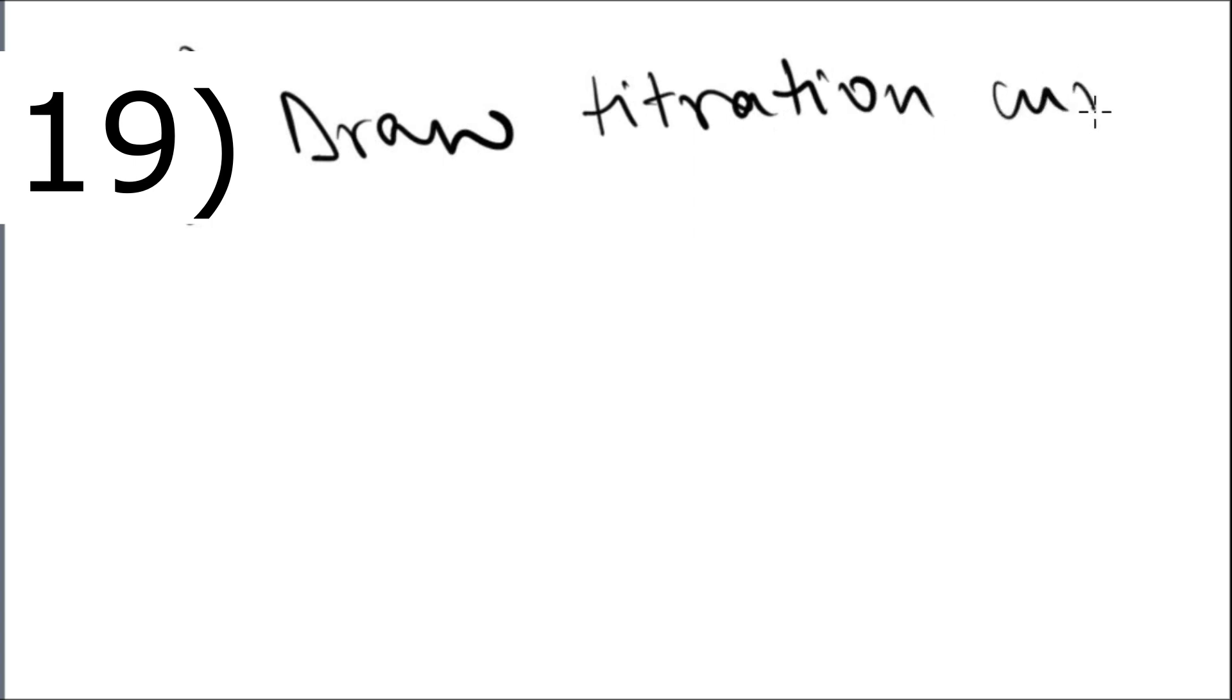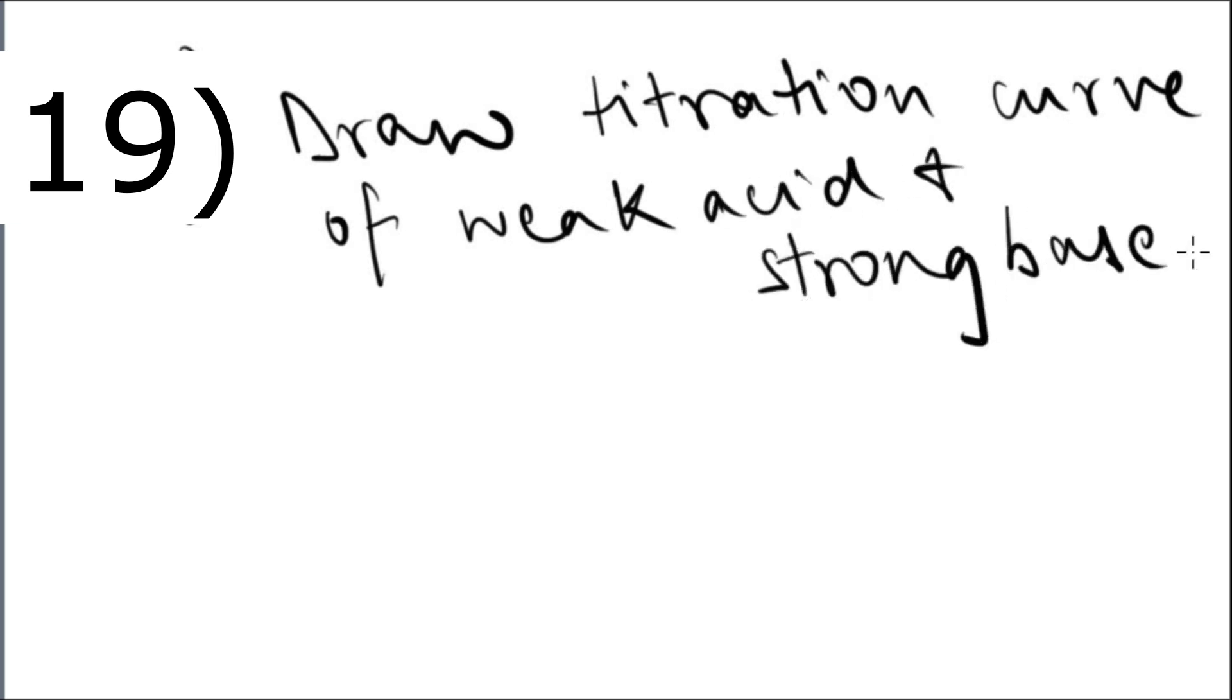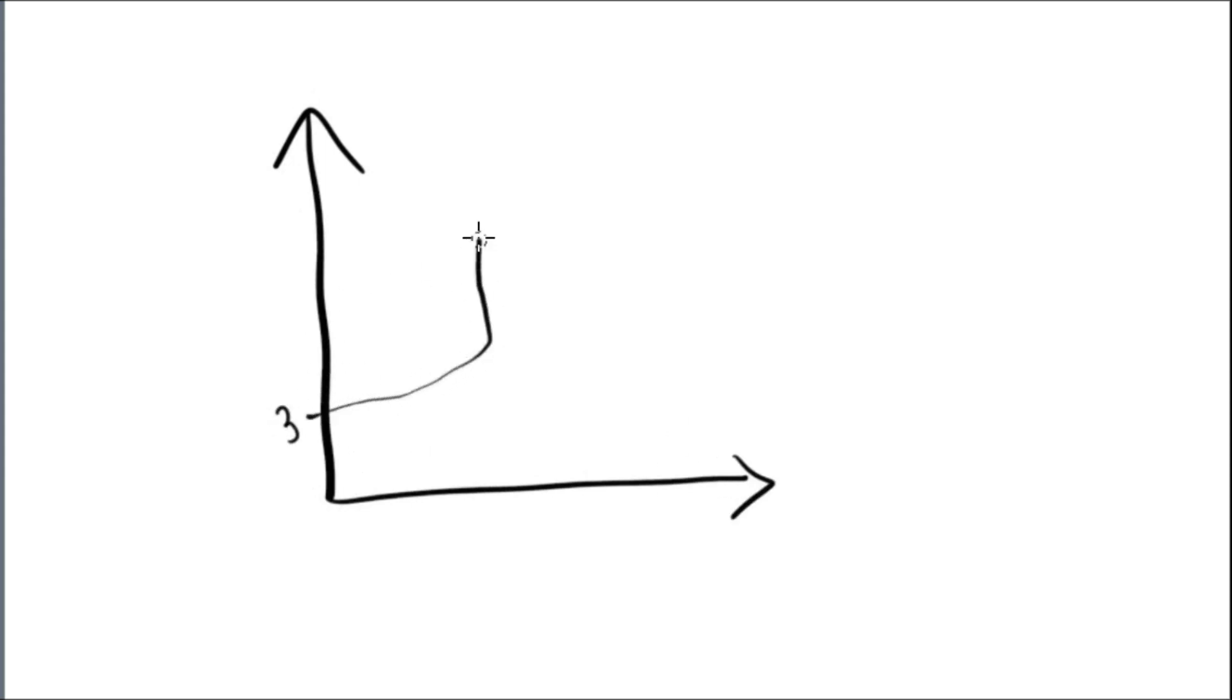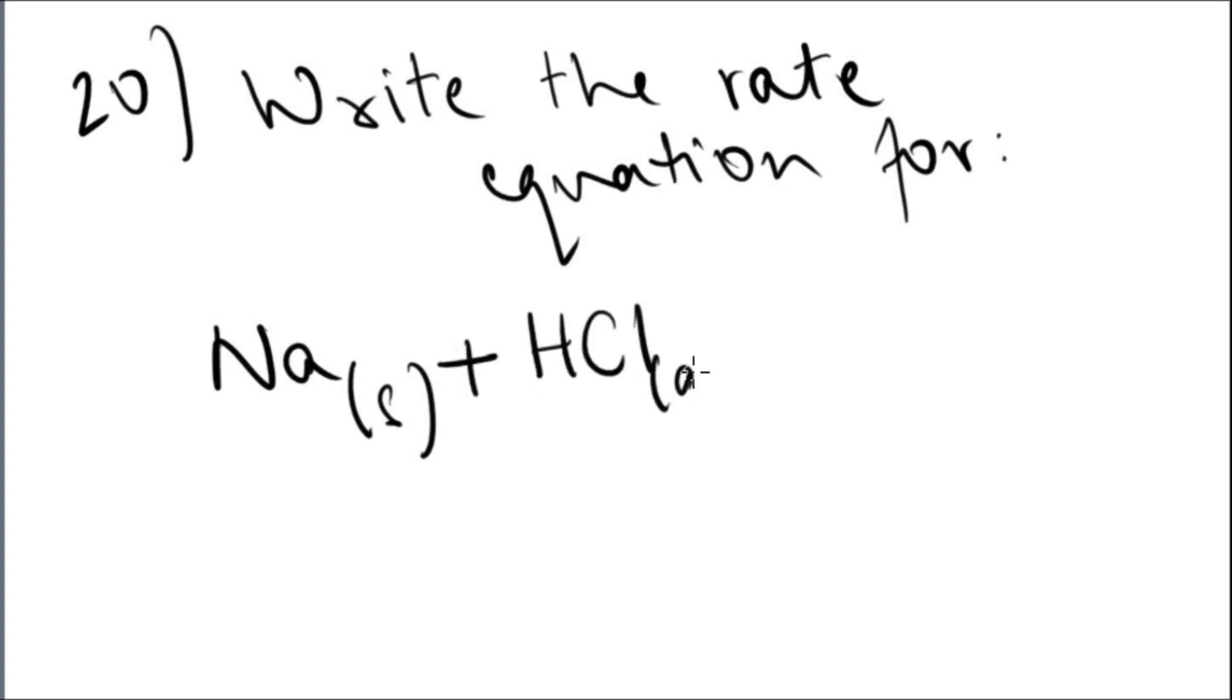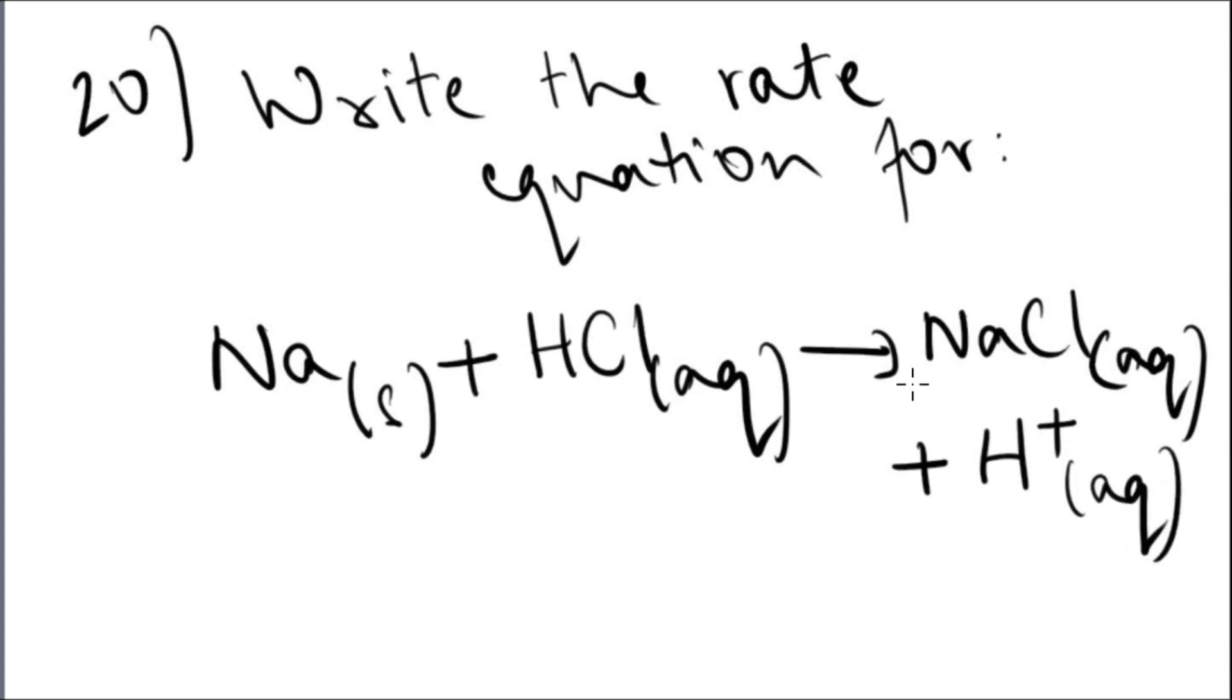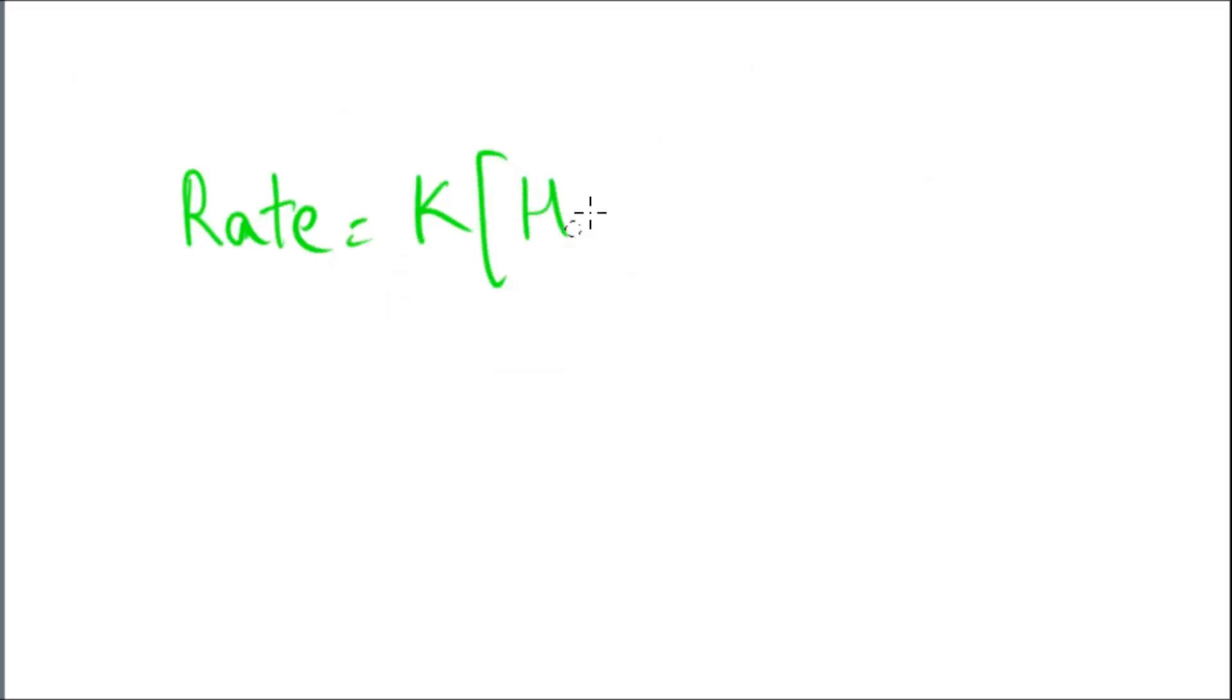Question number 19: you have to draw the titration graph of a weak acid and a strong base. Question 20: write the rate equation for NaCl plus H. The answer is a weak acid titration with a strong base, giving us NaCl plus hydrogen. Now, solids are like water, they are constant. So the answer is rate equals k times KCl only.